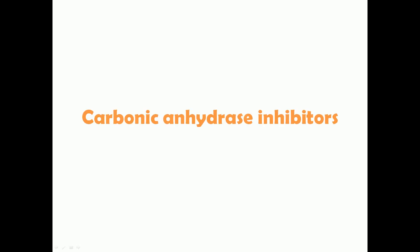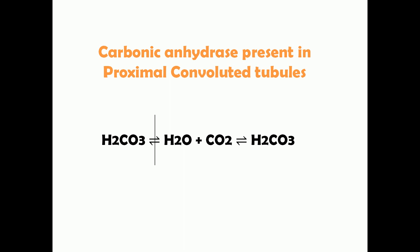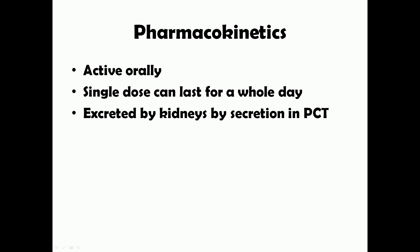First, carbonic anhydrase inhibitors. Carbonic anhydrase is an enzyme present in the proximal convoluted tubules. It helps in the conversion of carbonic acid (H₂CO₃) to water and carbon dioxide, and also in the reverse reaction — it is a reversible reaction mediated by this enzyme. Carbonic anhydrase inhibitors block this step, preventing the conversion of carbonic acid to water and CO₂, so it cannot be reabsorbed back into the nephron. The carbonic acid present in excess gets excreted in the urine in the form of sodium bicarbonate.